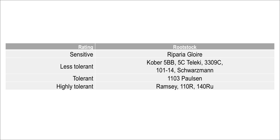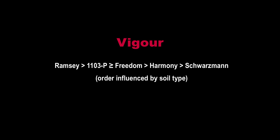In relation to drought tolerance, rootstocks such as Ramsey, 110 Richter and 140 Ruggeri are more drought tolerant than 101-14 and Schwartzman. Vine canopy growth may also be influenced by rootstock choice. In general, Ramsey and 1103 Paulsen are considered high vigour, while Schwartzman is considered a moderate vigour rootstock.